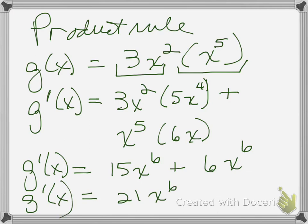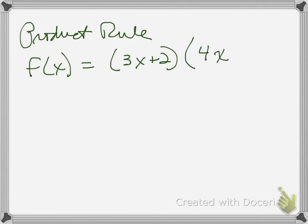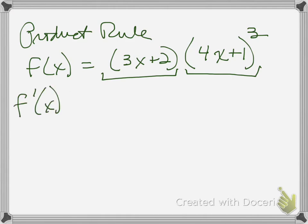Let's go to a more complicated product rule. This is still product rule, but now we're going to include the chain rule with it. So let's say f of x equals (3x plus 2) times (4x plus 1) to the 3rd. Here's the first function, here's the second function. Because I have two functions, I'm going to use the product rule. So f prime of x equals left (3x plus 2) times d-right — for d-right I have to do power rule, don't touch the inside, raise it to the one less power, and chain rule, so times 4.